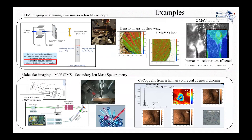A few other examples concern STIM imaging — Scanning Transmission Ion Microscopy. For this measurement, one needs a thin sample so the beam can exit and cross the whole sample without stopping inside it. After the target, a surface barrier or silicon diode detector is positioned with good resolution on the axis of the beam. What is measured is the energy loss of the particles after they traverse the target, and this energy loss is related to the thickness or density of the target. This way, one can obtain density maps.